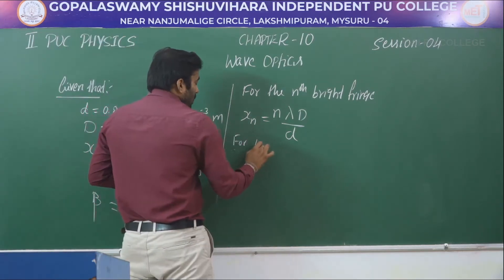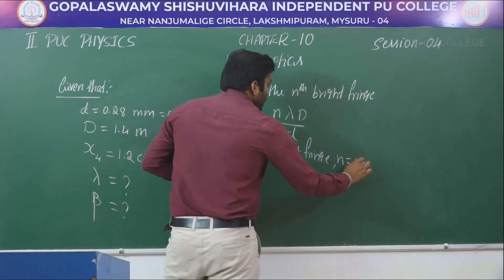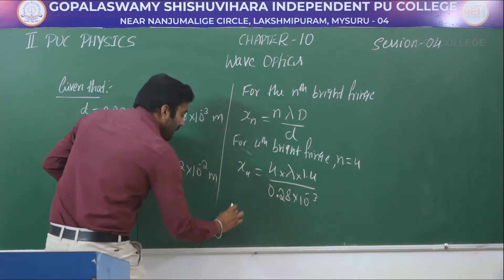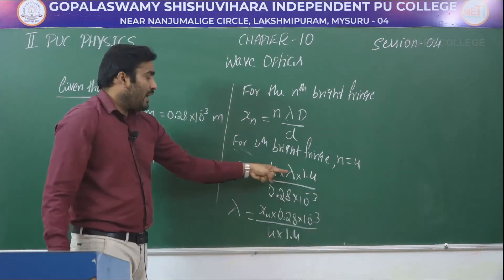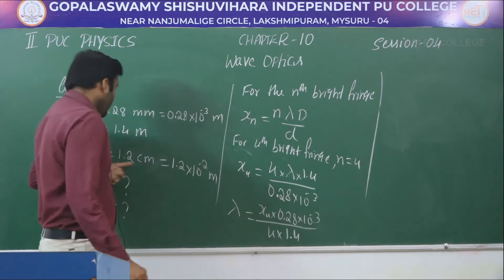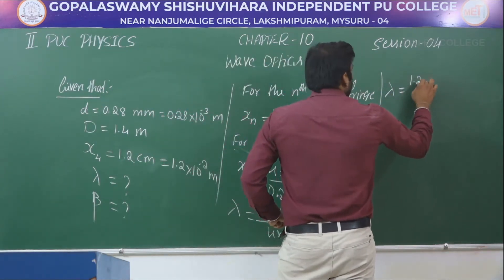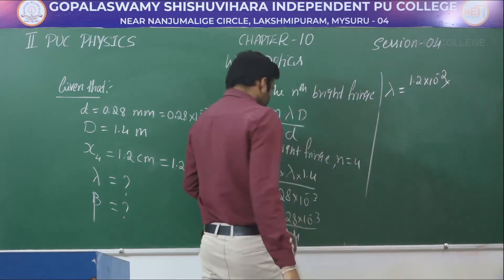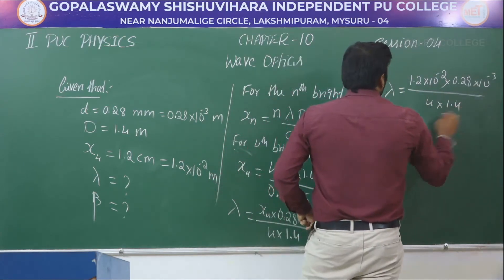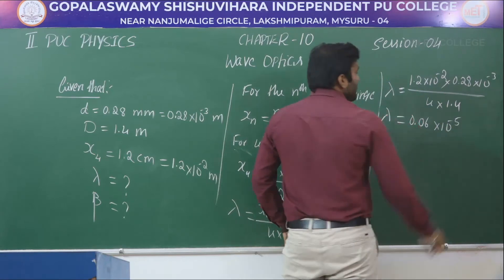For the 4th bright fringe, n is equal to 4. Rearranging the equation to find lambda: lambda = x₄ × d / (n × D). Substituting x₄ = 1.2 × 10⁻² meter, d = 0.28 × 10⁻³, n = 4, and D = 1.4: lambda = (1.2 × 10⁻²) × (0.28 × 10⁻³) / (4 × 1.4), giving 0.06 × 10⁻⁵.